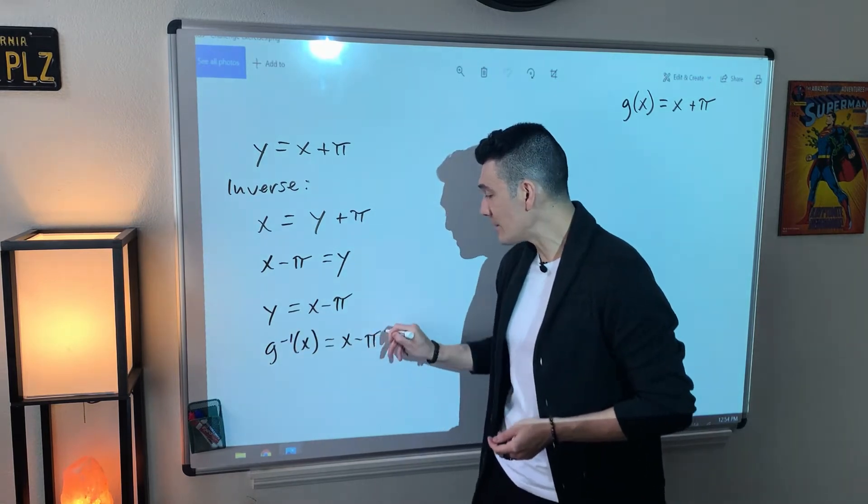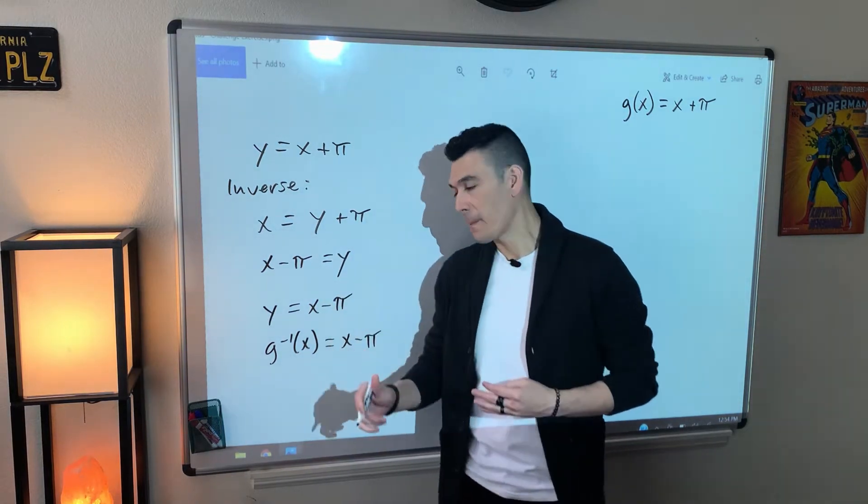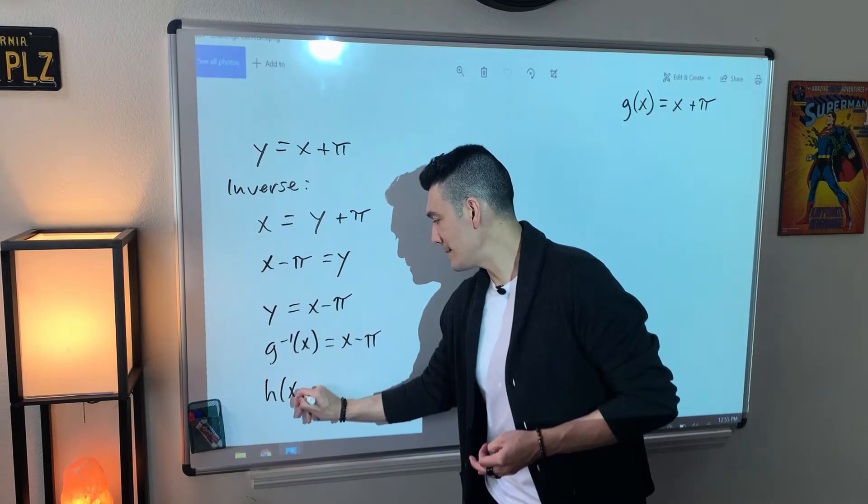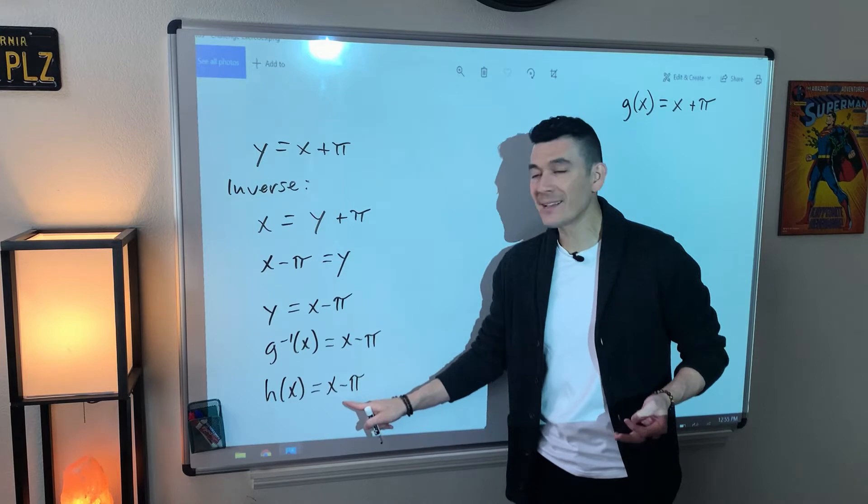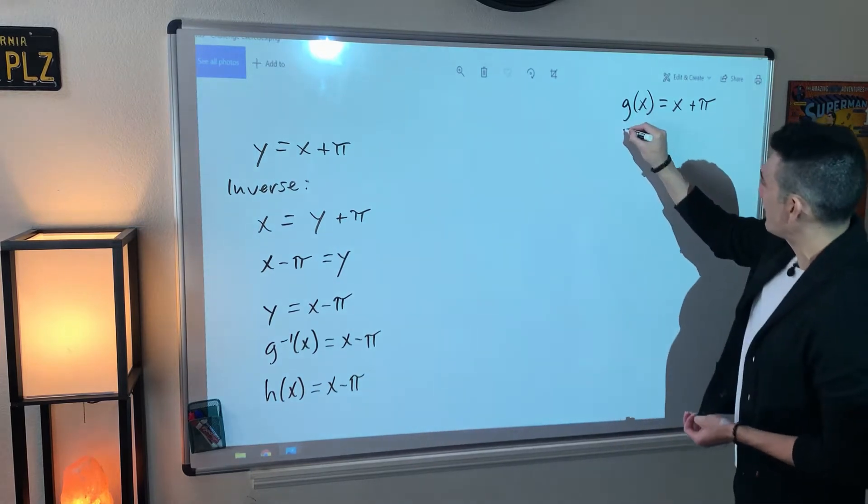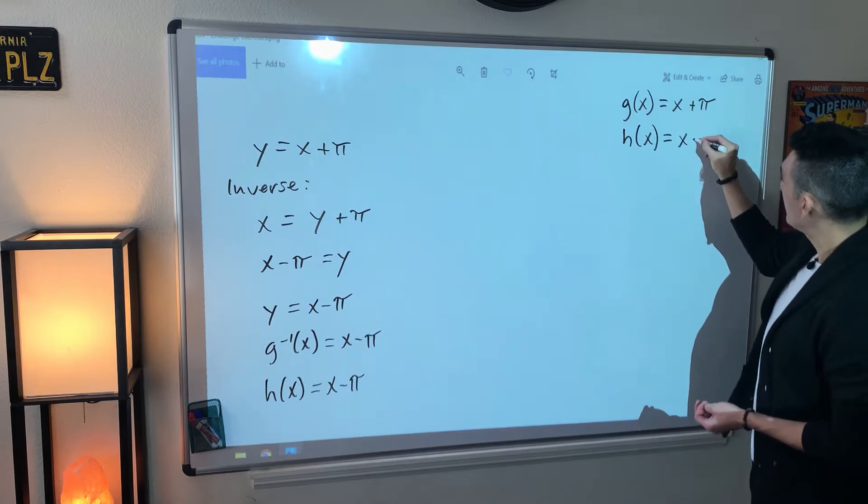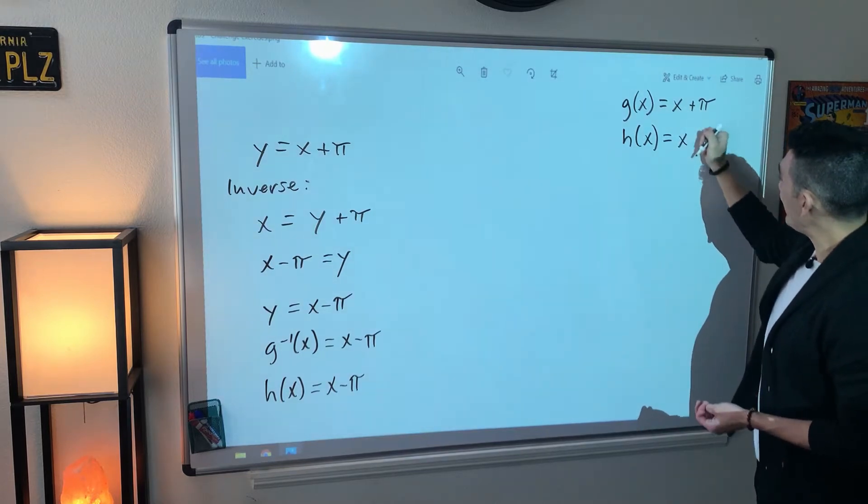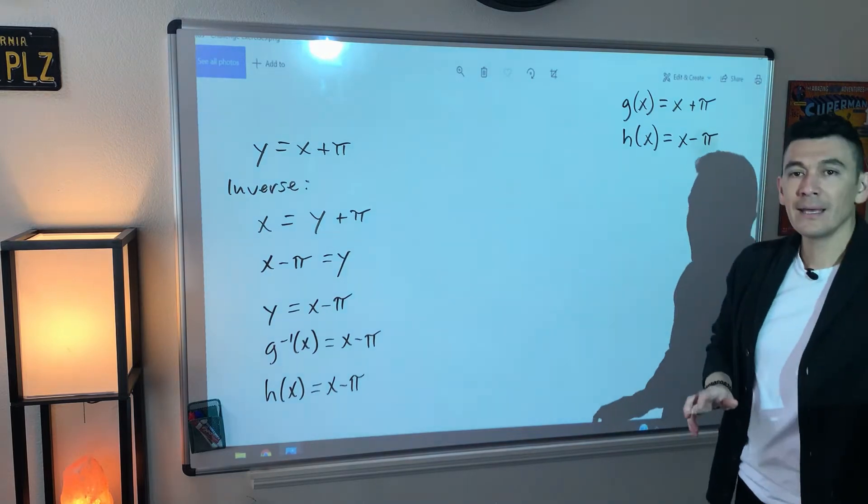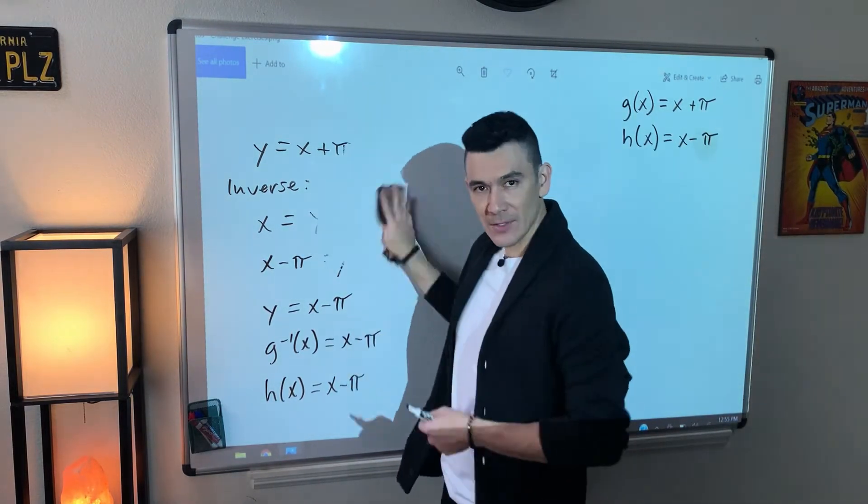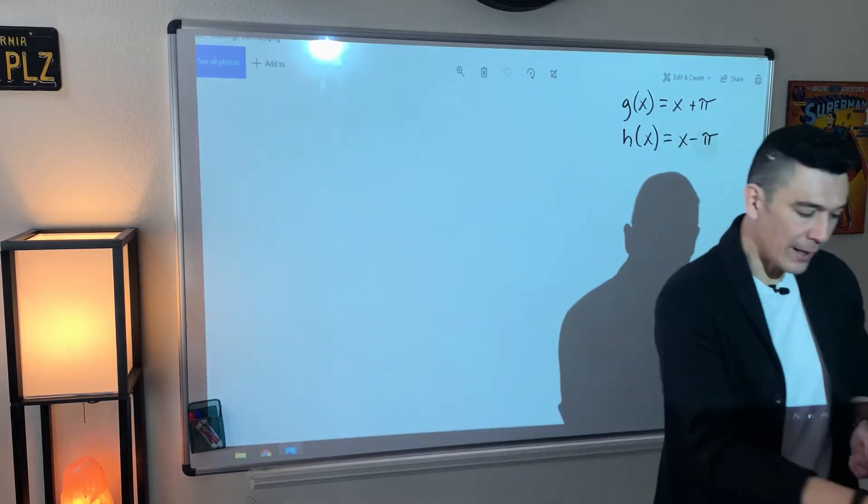So this animal should be called g inverse of x. But in the directions, they said that g inverse could also be called h. So what I'm trying to say is that the inverse of g, otherwise known as h, is x minus π. Let me write that down here. So we have our two functions. And they are inverses of one another, g and h. So let me just wipe this off. Let's go back now to the main problem. And let's see what is going on.